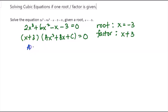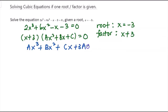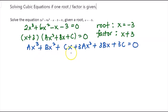After expanding, you will have ax cubed plus bx squared plus cx plus 3ax squared plus 3bx plus 3c. This is the fully expanded equation.